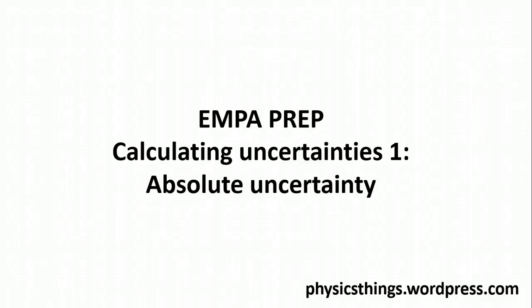Okay, in this video we're going to be looking at something called absolute uncertainty. Now, all we mean by uncertainty is an unreliability in your results. This might be due to human error, this might be due to the precision or lack thereof of your measuring instruments. But either way, for your EMPA, there are two different types of uncertainty that you need to be able to calculate.